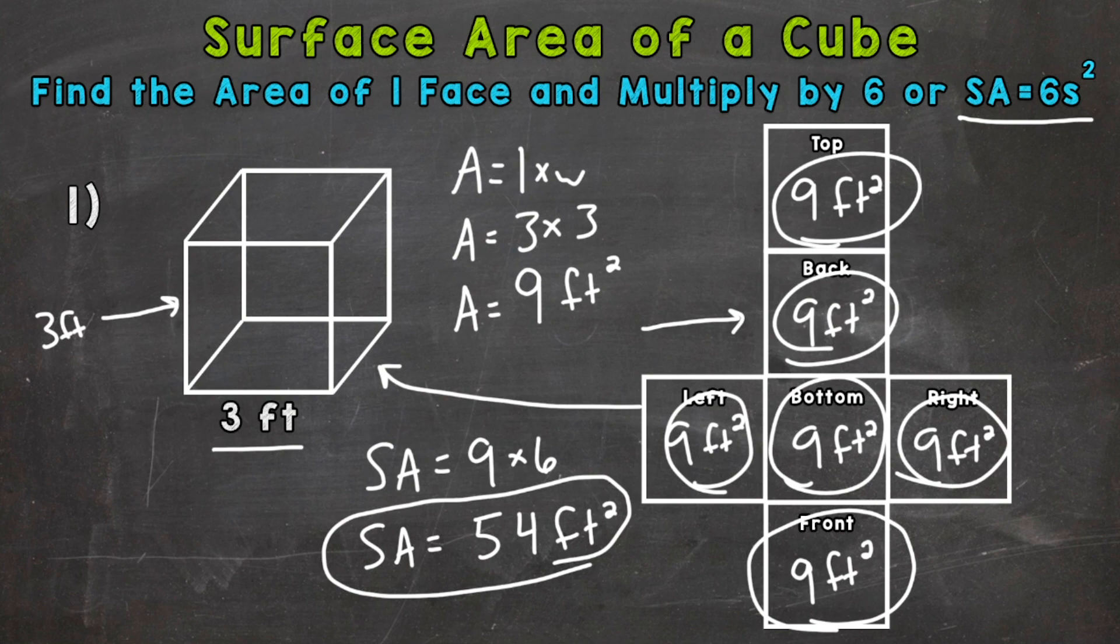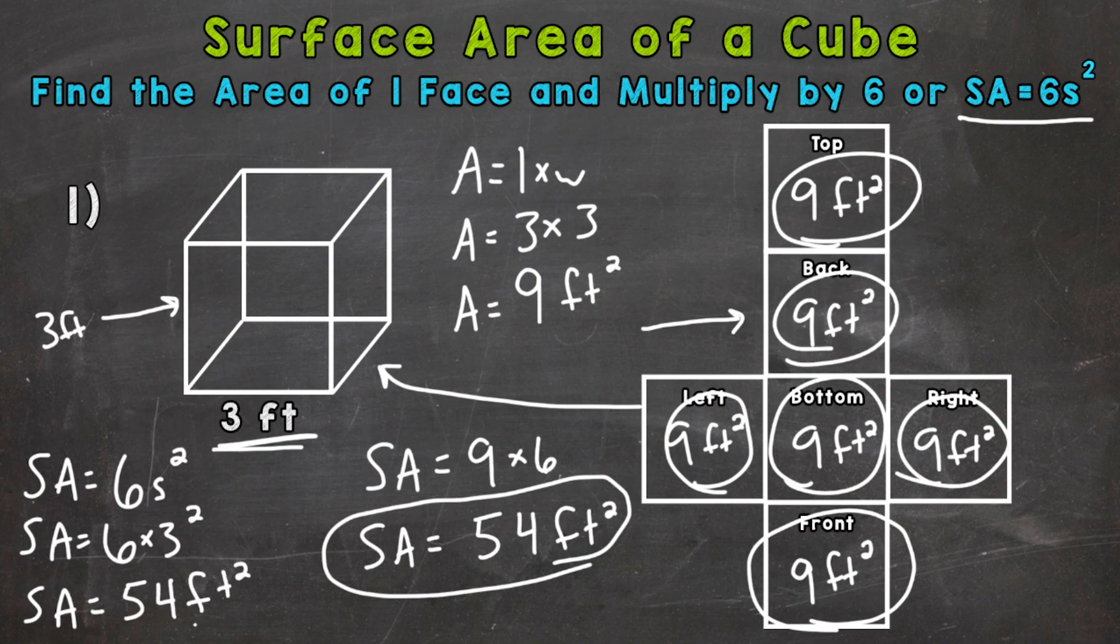Now, I'm going to show you how to use the formula too. We could do surface area equals six times a side length squared. So that S squared or three squared in this case gives us the area of one of the faces. It's the same as doing length times width for a square. So we can plug in one of our side lengths, which is three feet, so six times three squared. Now, due to order of operations, we need to do three squared first, which is three times three is nine, and then multiply by six. So we get the same answer of 54 square feet if we use the formula as well.